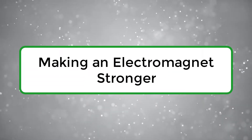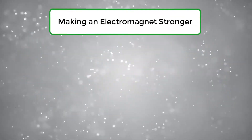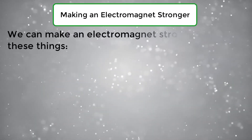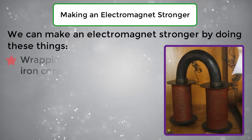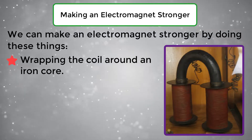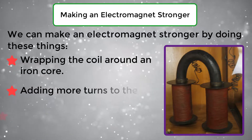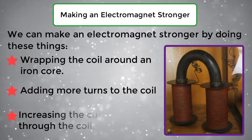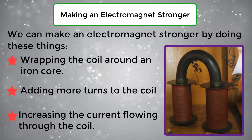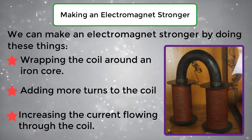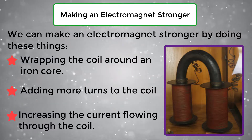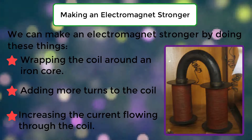Making an Electromagnet Stronger. We can make an electromagnet stronger by doing these things: wrapping the coil around an iron core, adding more turns to the coil, and increasing the current flowing through the coil.